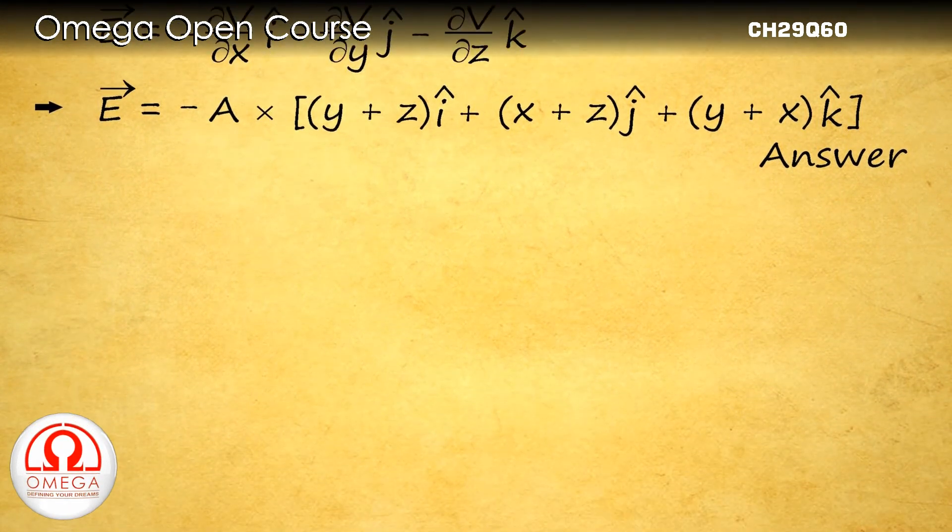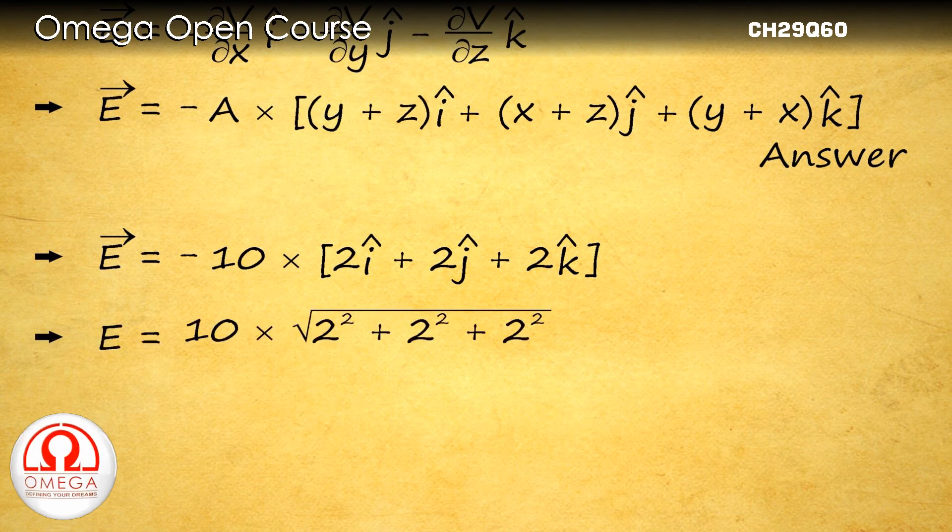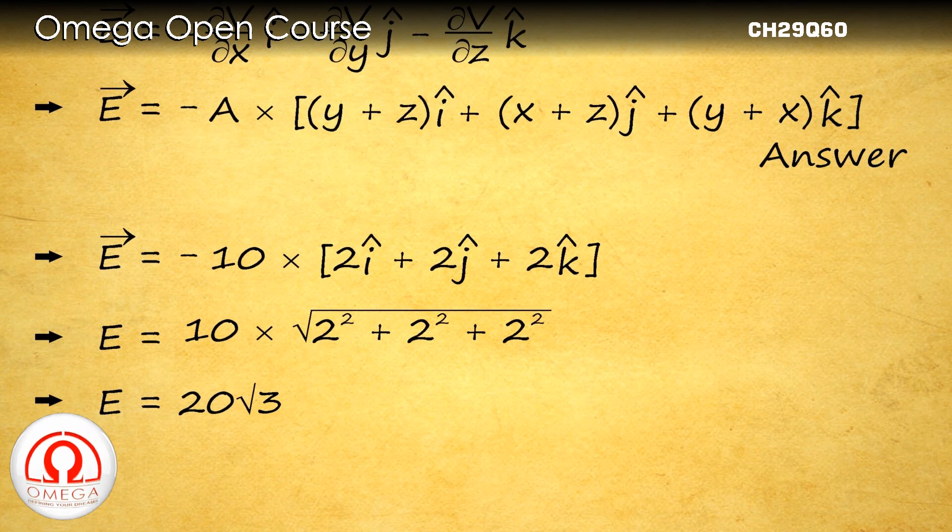Putting A equals 10 and x, y and z as 1, we get vector E equals minus 10 times (2 i cap plus 2 j cap plus 2 k cap). The magnitude of E is 10 times root of (2² plus 2² plus 2²) or 20 root 3.